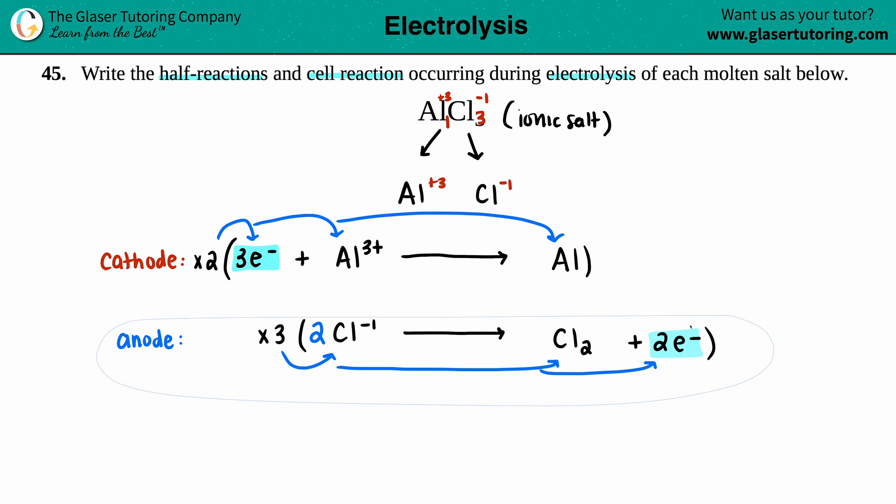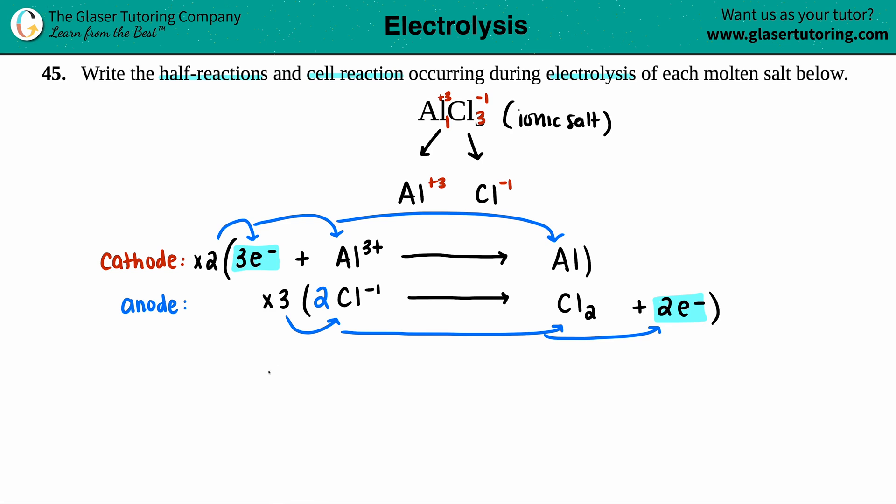For the cathode, I'm timesing everything by two. So I'll have six electrons plus two Al3+, which will yield two aluminums. And then for your anode, I'm taking the three and timesing it by all of my coefficients. So I have three times two is six Cl minuses, that's minus one. And then I have three Cl2s plus six electrons. And now since I have six electrons on both sides, I can cancel them out and I can add the two equations and I can get my whole equation.